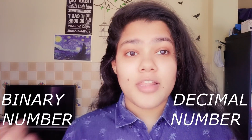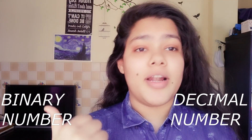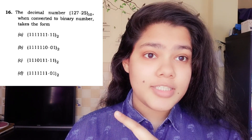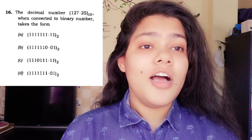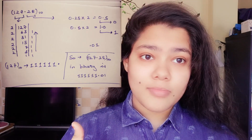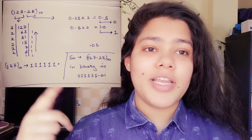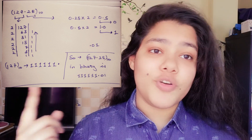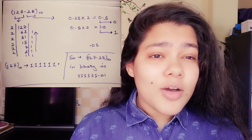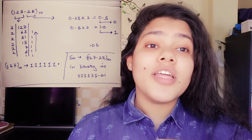Second, binary number conversion is important — conversion from binary to decimal and decimal to binary. For example, you divide by two repeatedly until you get the remainder, then read it upward to get the binary equivalent. Practice example questions like these and try to solve them.